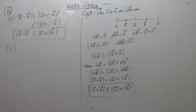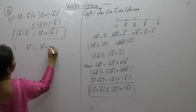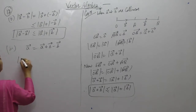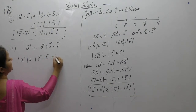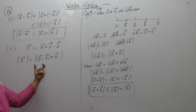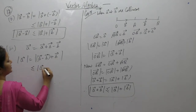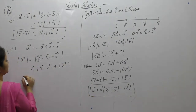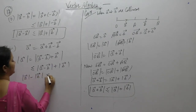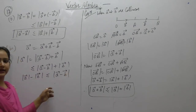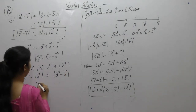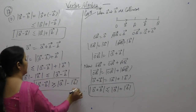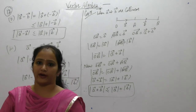Now for the third part, we know that we can write A vector as A vector minus B vector plus B vector. Taking the magnitude, magnitude of A vector equals magnitude of A vector minus B vector plus B vector. By using this identity, magnitude of A vector minus B vector plus B vector is less than or equal to magnitude of A vector minus B vector plus magnitude of B vector. Therefore, magnitude of A vector minus magnitude of B vector is less than or equal to magnitude of A vector minus B vector.